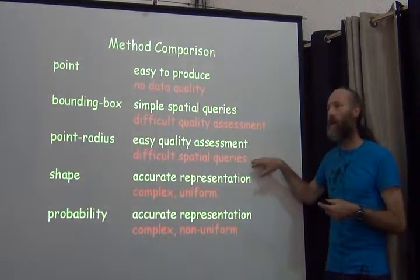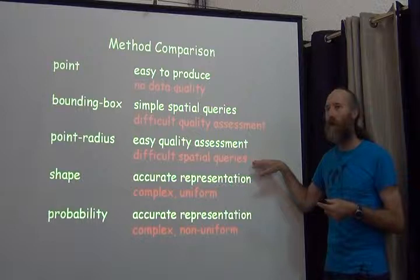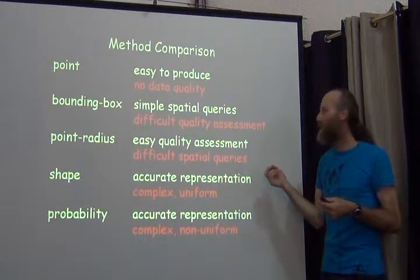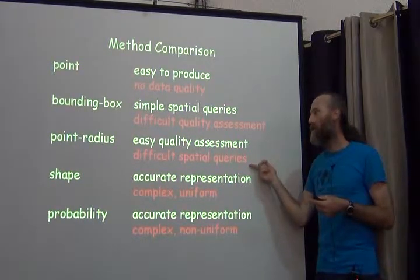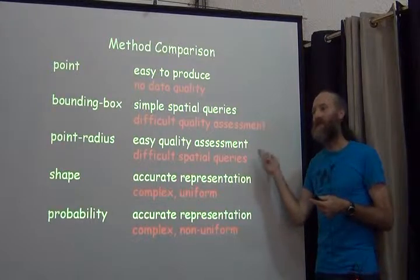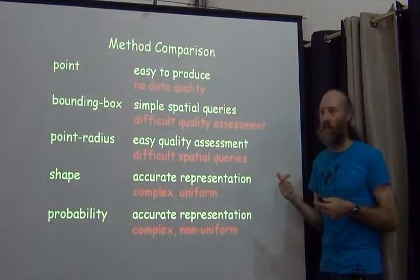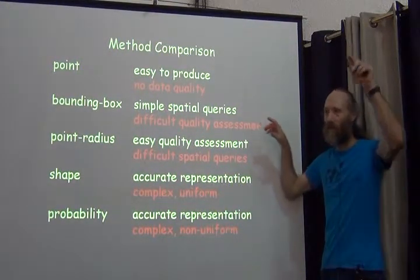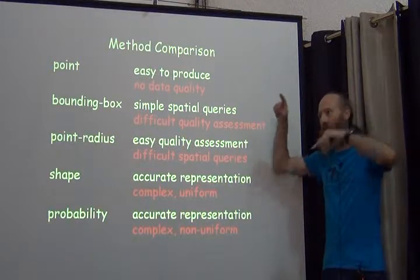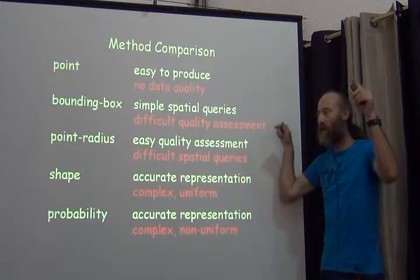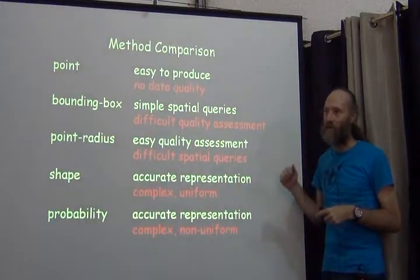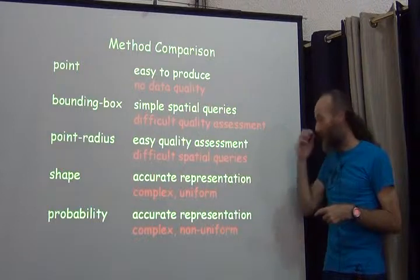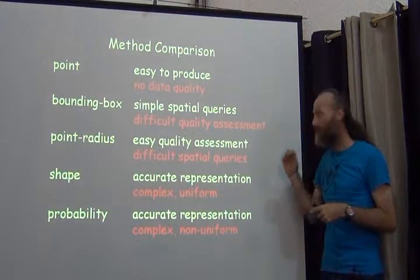The difficult part of the point-radius method is knowing, given a point and a radius, whether a location is inside the circle. It's easy with a bounding box — you just look between the latitudes and longitudes. But finding out if something is inside a circle requires some serious mathematics.